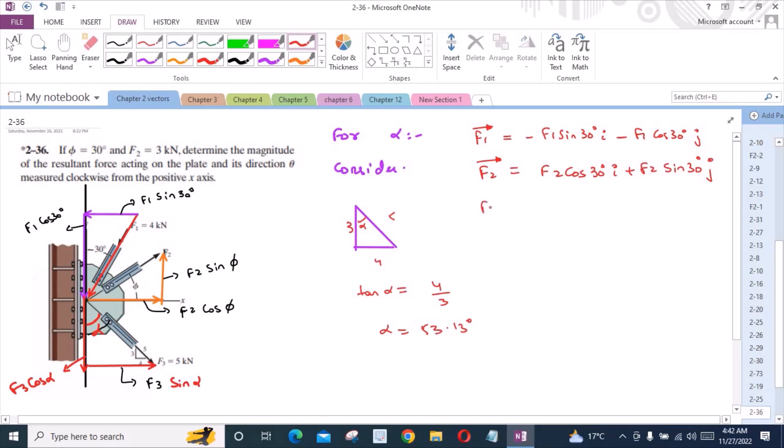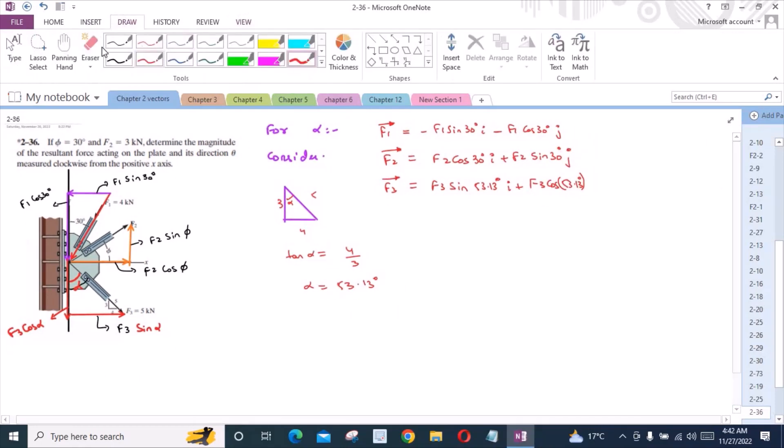Now, for the force F3, I have F3 sin alpha and alpha is 53.13 degrees i minus F3 cos 53.13 degrees j.